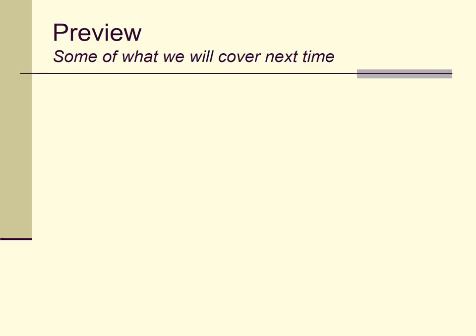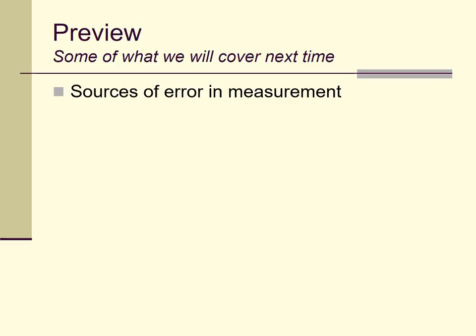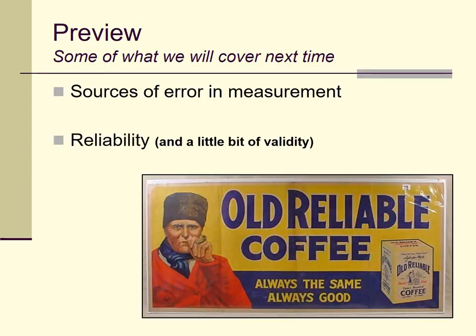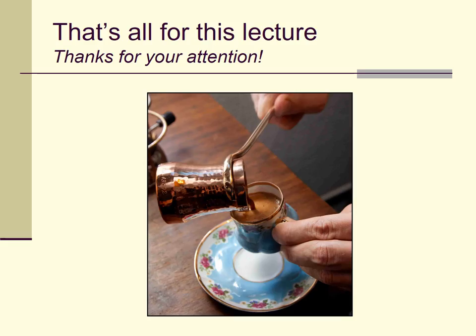So I promised this would be a short lecture, and it was, despite a few digressions. Preview for next time: I'll be talking about measurement error, different sources of measurement error, and I'll be making a connection between measurement error and reliability. I'll also talk a little bit about validity, but much of that is for a future lecture. That's all for this lecture — thanks for your attention. I hope it gave you something to think about as you learn more about tests and use tests for your research or clinical practice.